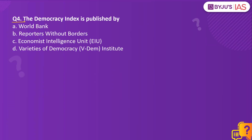Question 4: The Democracy Index is published by — Option A, World Bank; Option B, Reporters Without Borders; Option C, Economist Intelligence Unit; Option D, Varieties of Democracy Institute.